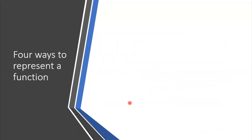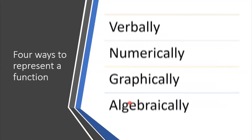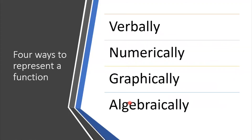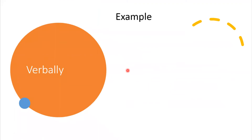There are four ways to represent a function. We can represent a function verbally, numerically, graphically, and algebraically. We can represent a function verbally by just giving the description or characteristic of something.